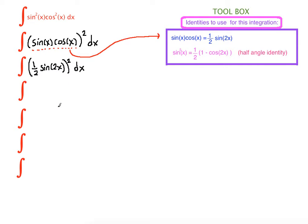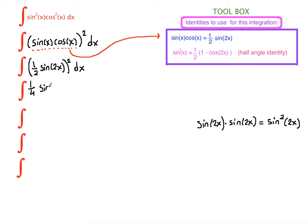Next is to square whatever we have in parenthesis. What is one half squared? One half squared is one fourth. What is sine of 2x squared? Sine of 2x squared is sine of 2x times sine of 2x, which is sine squared of 2x. So we write that down as one fourth sine squared of 2x dx, and we can pull the constant one fourth to the front.